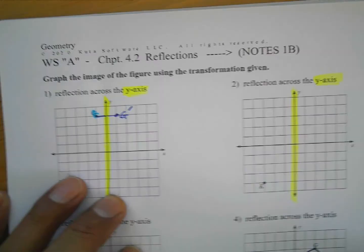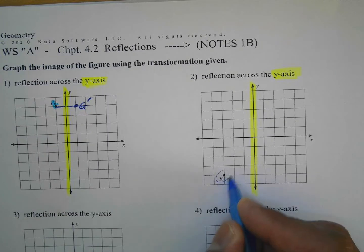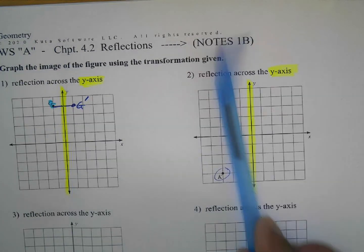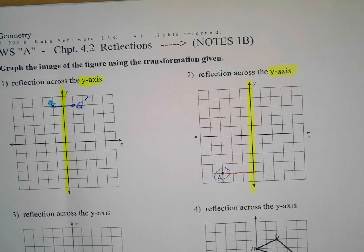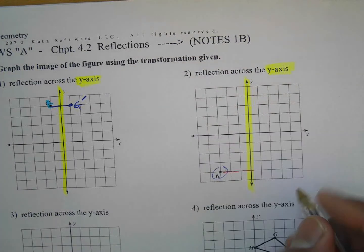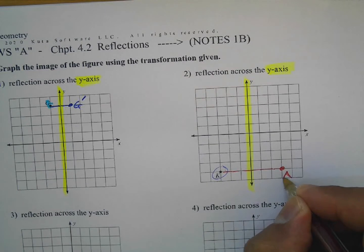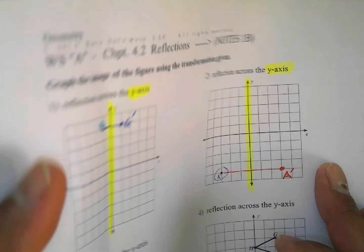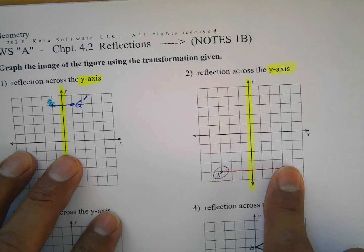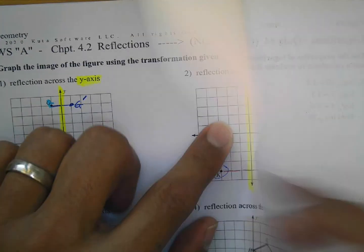What if I have a point over here? This is point A. I'm reflecting along the y-axis, so I count: one, two, three — it's three units to that line. So I go the same distance the other way: one, two, three, and now it's going to be here. That's reflecting along the y-axis. It's like folding over — if it's on this side it'll be here, and if a point were here it would reflect to that side.